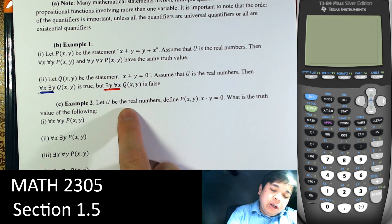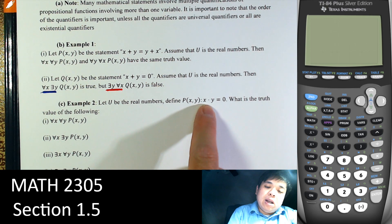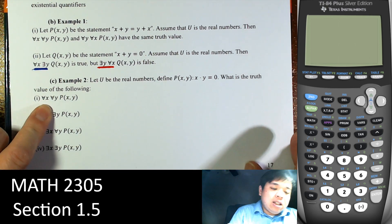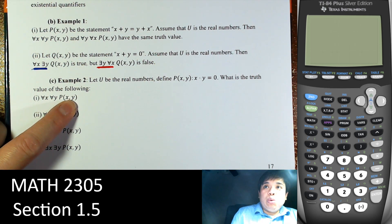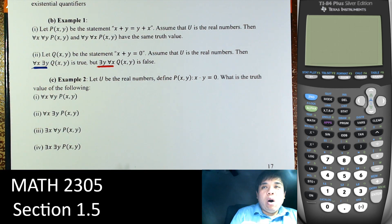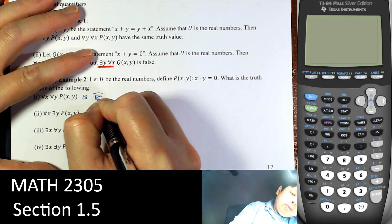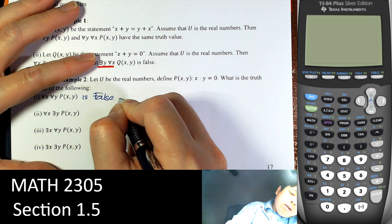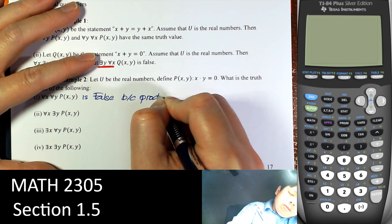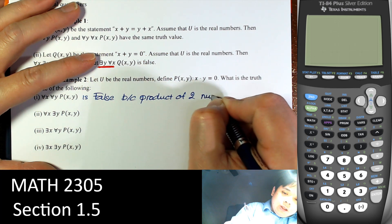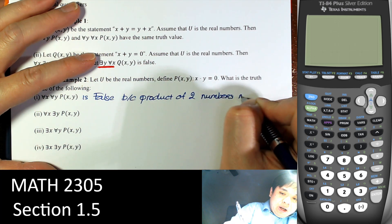Now let the domain be real numbers and define P(x,y) as the product x·y equals 0. What is true? For every x, for every y, P(x,y) — this is not true. If you take any numbers x and y, like 5 times 3, it's not going to be 0. So it's false, because the product of two arbitrary numbers may not be 0.